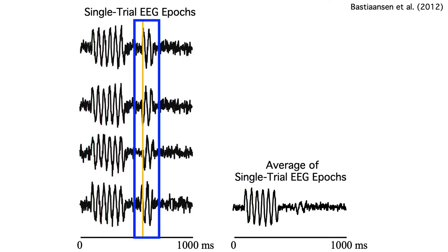But the second alpha burst doesn't have a consistent phase from trial to trial. Where we have a positive peak in the first epoch, we have a negative peak in the second, and no peak at all in the third. These oscillations therefore cancel out in the average, which makes it look as if there was no stimulus-related brain activity at all during this period. In other words, when we do conventional averaging, any oscillations that aren't phase-locked to the stimulus become invisible.